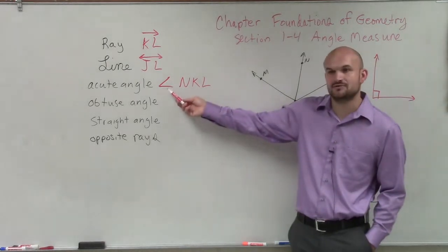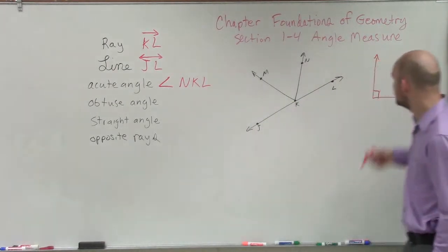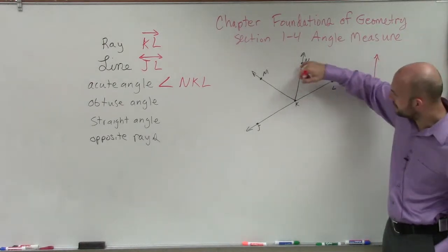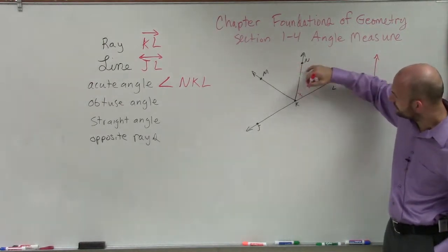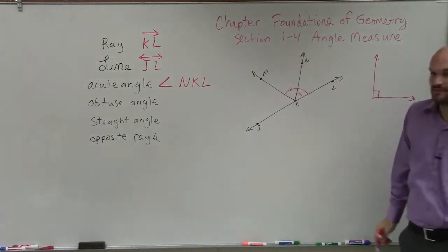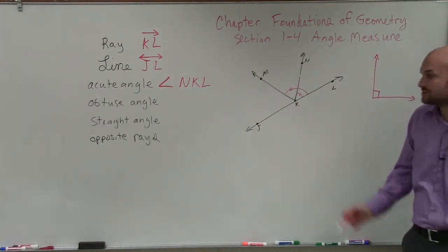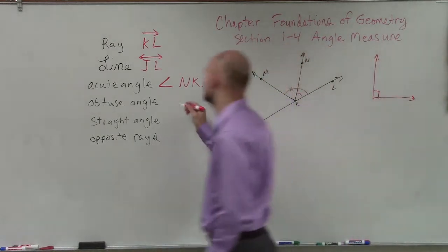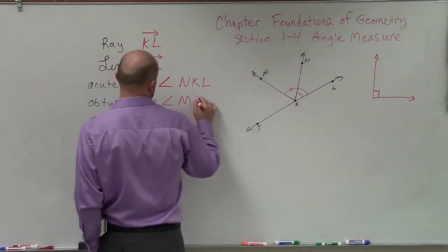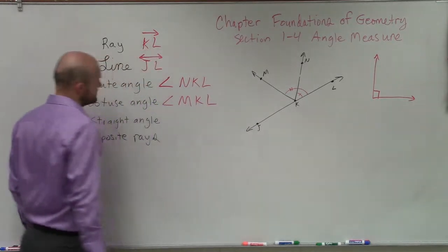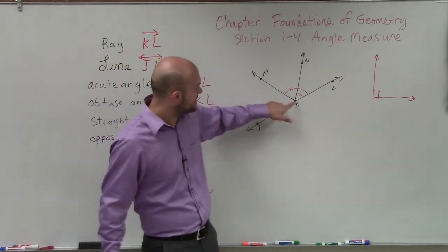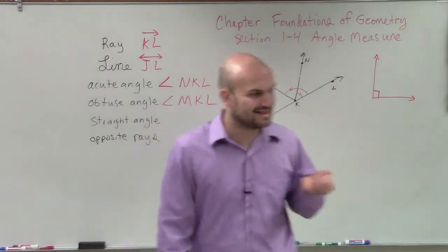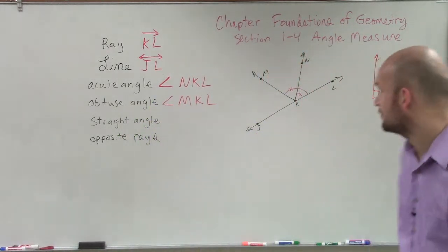Now, an obtuse angle has to be larger than this. So if here is an acute angle, I could say that here would be an obtuse angle. So how could I label that obtuse angle? I could say M to K to L. And do you guys notice how, again, my vertex of that larger angle? Remember, the vertex is in the middle.